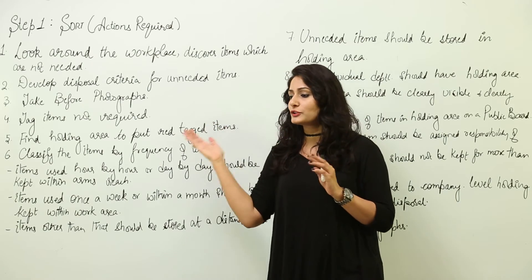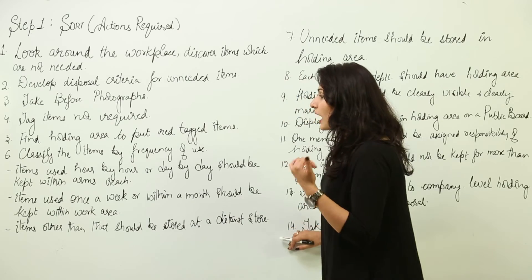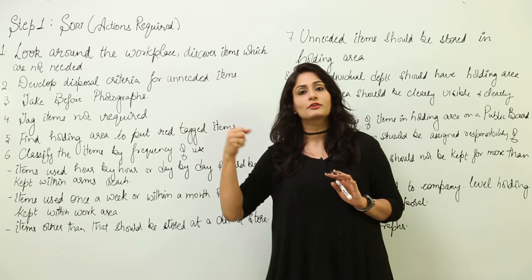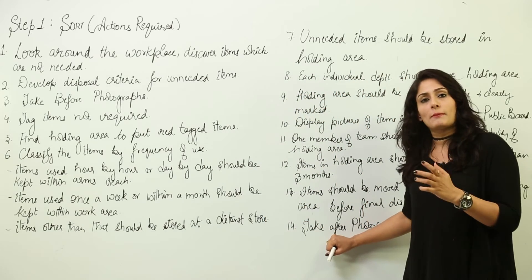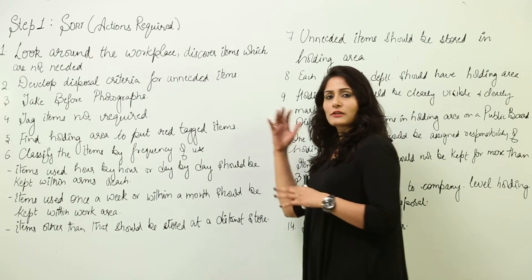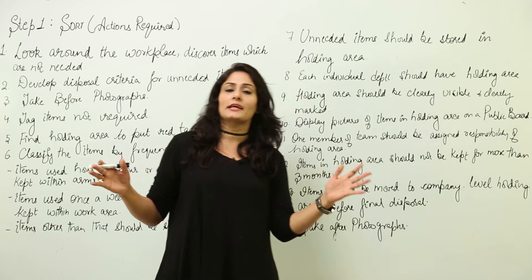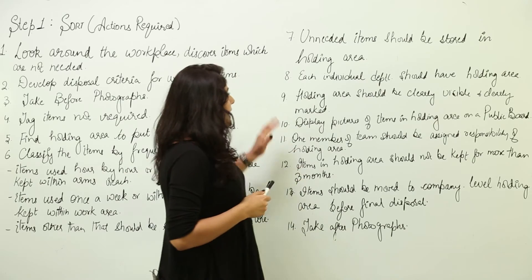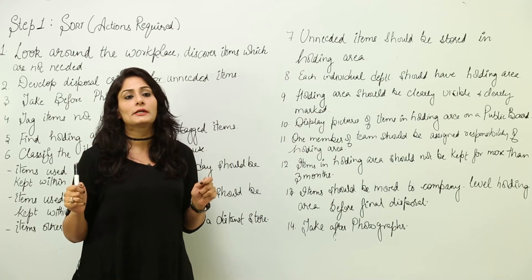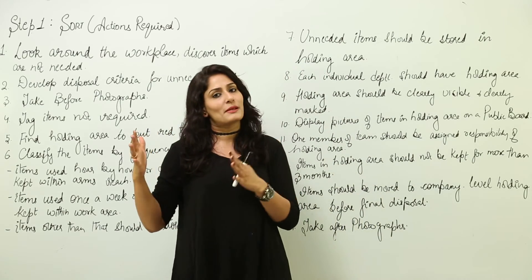The frequency of use also determines where each tool needs to be placed. Items used hour by hour or day by day should be kept within arm's reach so employees don't waste time bringing tools to the workplace. Items used once a week or within a month should be kept in the work area itself. Items not used within a month should be stored at a distant location. Unneeded items should be stored in a holding area; each individual department should have its own holding area, which should be clearly visible and clearly marked.